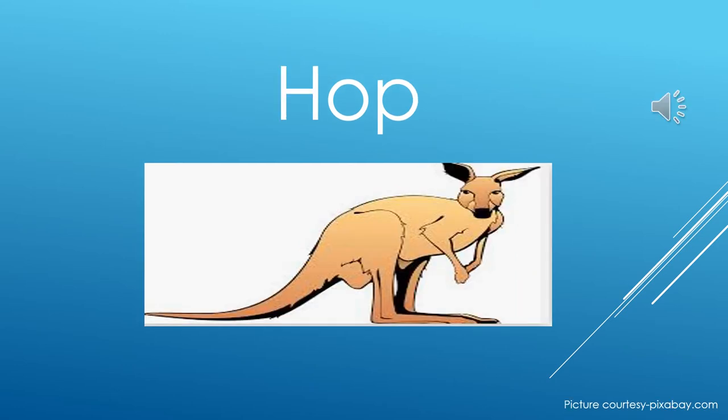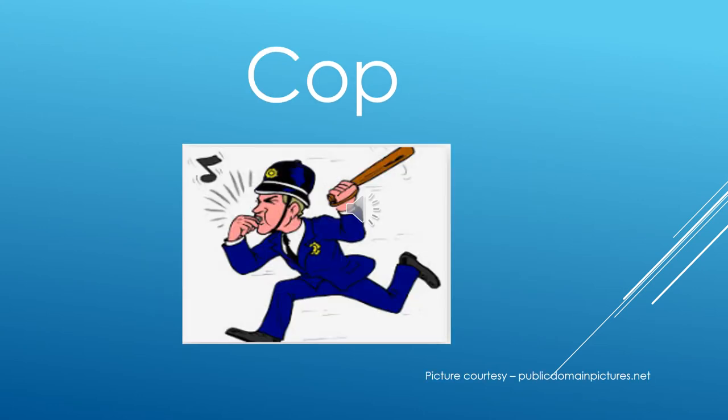The next is H, Op — Hop. Can you see that kangaroo? The kangaroo likes to hop. How does the kangaroo move? It hops from one place to the other. And small children also like to hop on one leg.